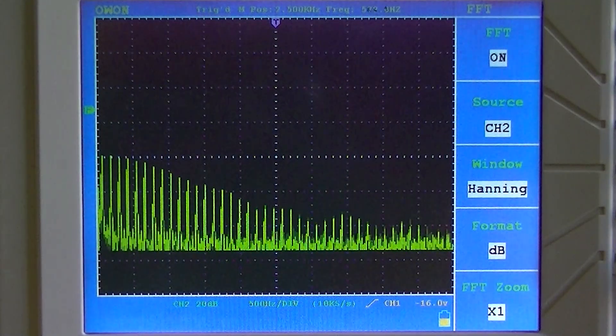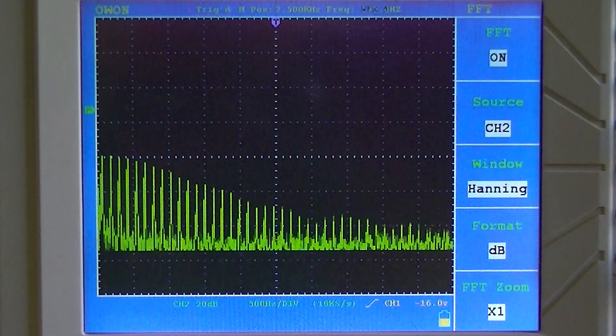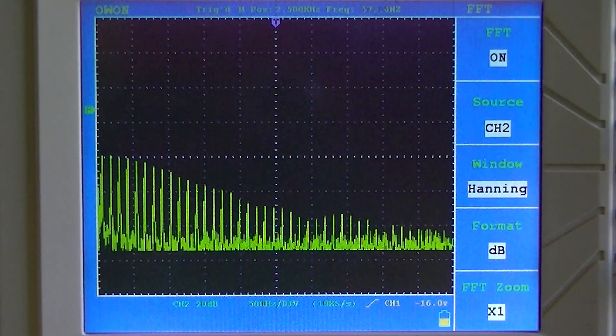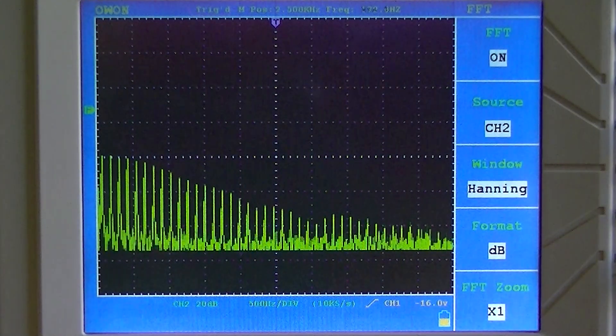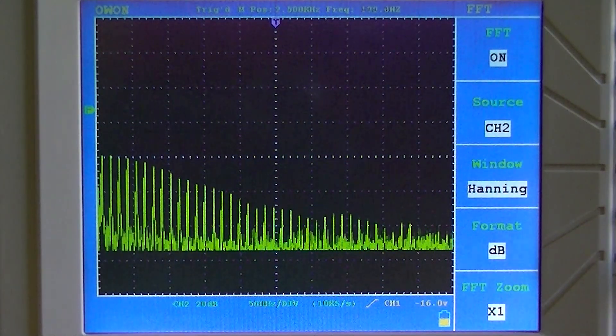So we're back on our original display of 500 hertz per division in the horizontal direction. And as you can see, there's a lot of harmonics coming out of this power supply.